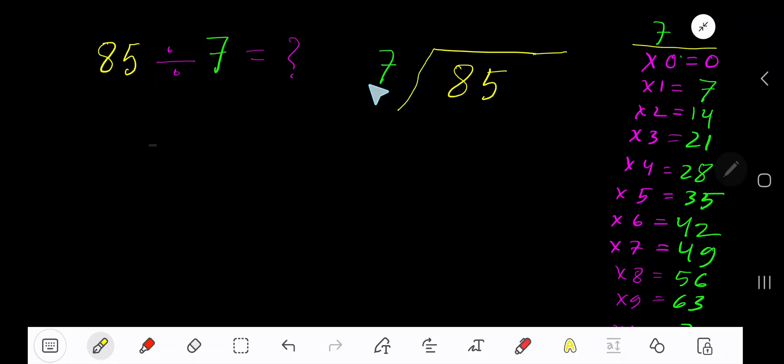85 divided by 7. Here, 7 is a divisor, so we need the multiplication table of 7. 7 times 0 is 0, 7 times 1 is 7, 7 times 2 is 14, 7 times 3 is 21, 7 times 4 is 28. To find out the multiplication table of 7, just add 7 with the previous step: 0 plus 7 is 7, 7 plus 7 is 14, 14 plus 7 is 21. This process will continue.